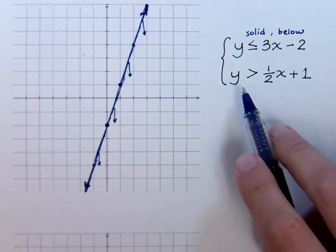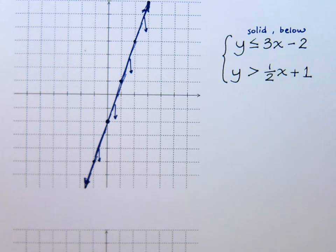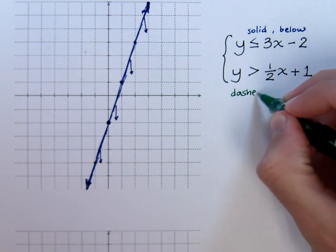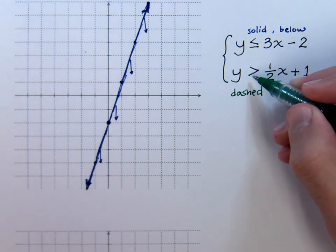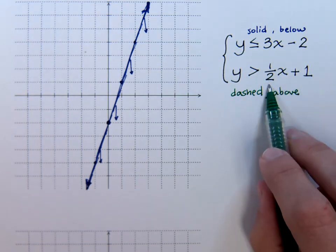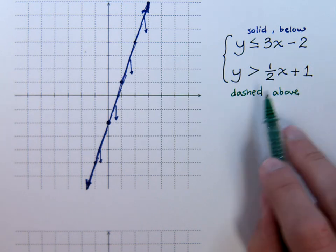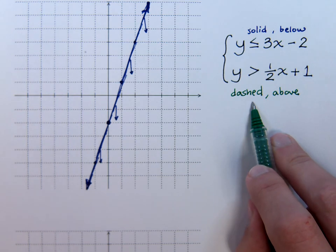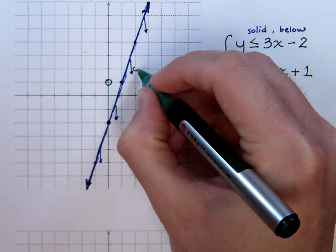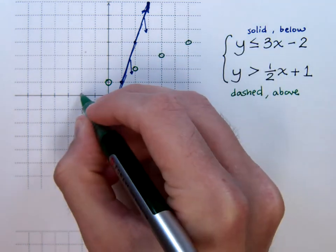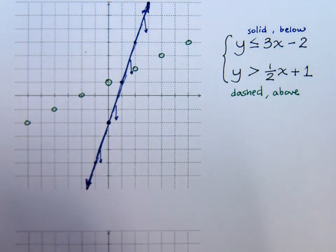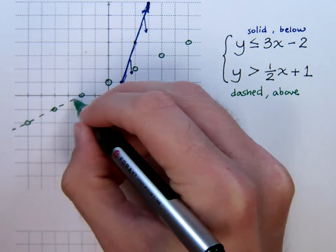Now we graph the other linear inequality. This one requires a dashed line because it's 'greater than' but not equal to, and we'll be shading above. It has a slope of 1/2 and a y-intercept of positive 1, or (0, 1). Since this is a dashed line, any plotted point needs to be an open circle. We start at the y-intercept (0, 1) and use the slope — up 1 and over 2.